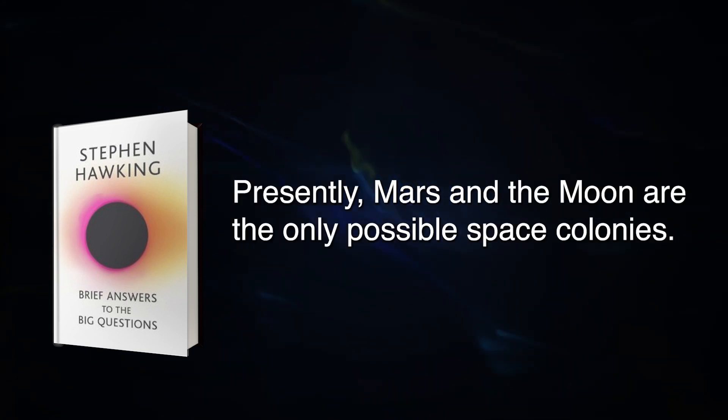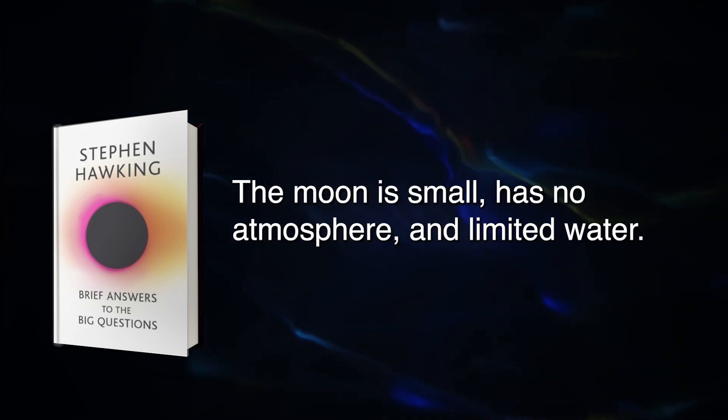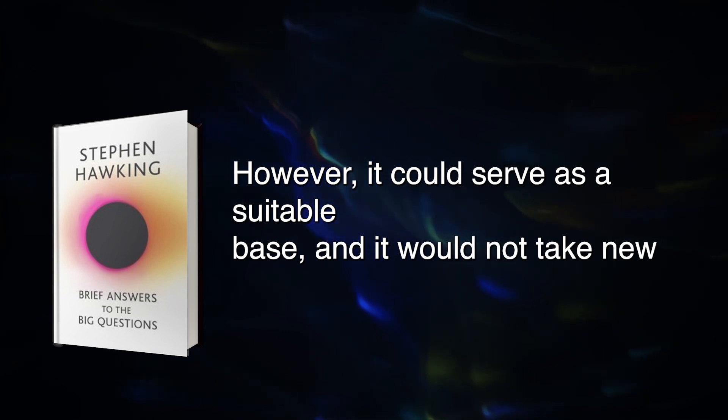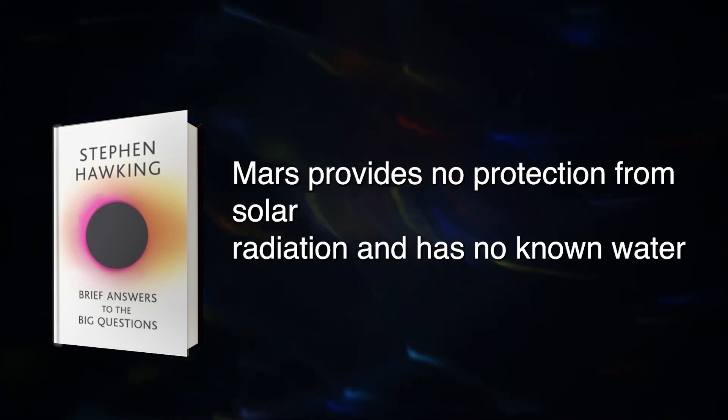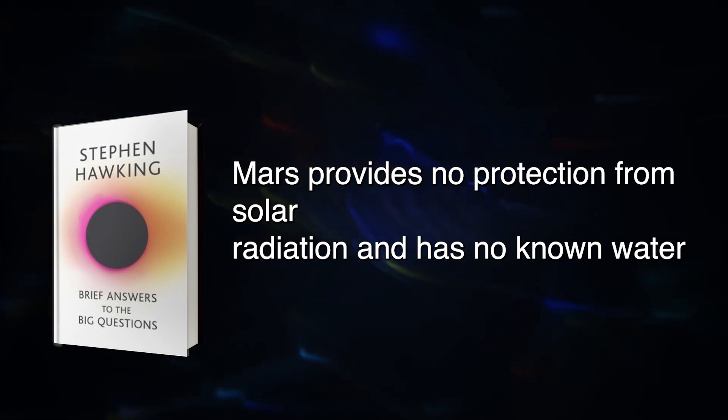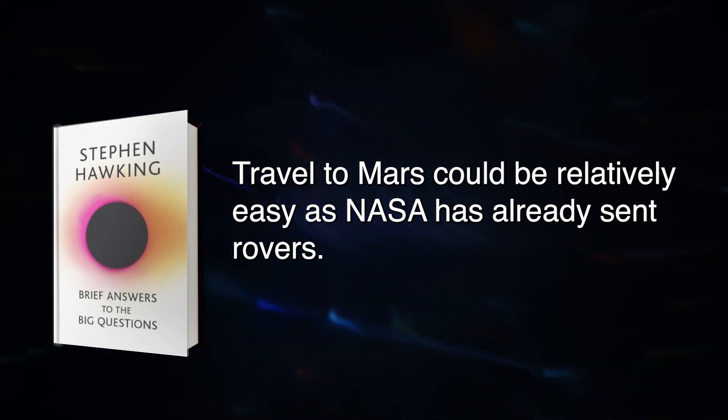Presently, Mars and the Moon are the only possible space colonies. Both present problems. The Moon is small, has no atmosphere, and limited water. However, it could serve as a suitable base, and it would not take new science to figure out how to get there. Mars provides no protection from solar radiation and has no known water source. Travel to Mars could be relatively easy as NASA has already sent rovers.